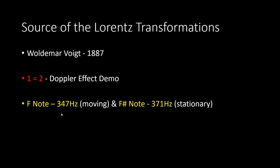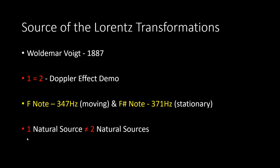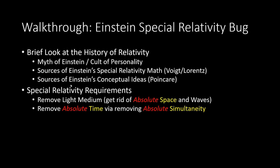Einstein wants both of these clocks to be equally valid and real. When we look at his paper, he uses the idea of a light pulse clock to try to convince us that one equals two. Before we review Einstein's paper, let's take a look at where he got his relativity ideas — this will help us better understand the design behind his special relativity paper.